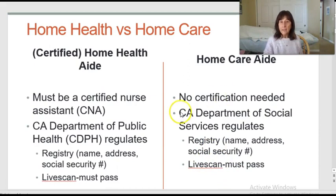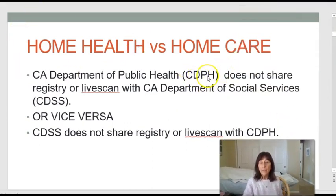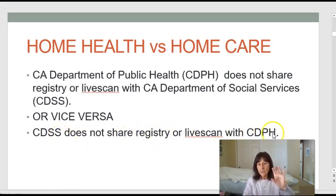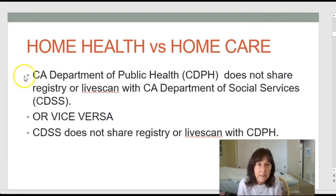If you go on to be a CNA, know that the California Department of Public Health and the California Department of Social Services do not talk to each other and don't share information. People that have been CNAs and home health aides who want to work for a home care agency have to be on both registries and get livescans in both places.